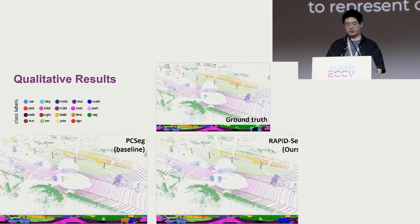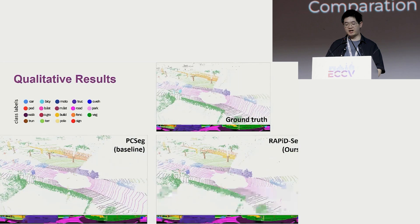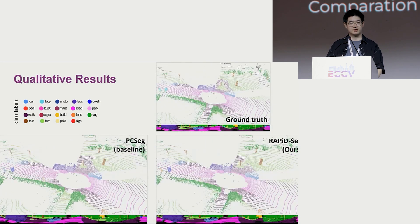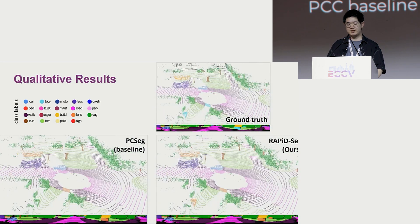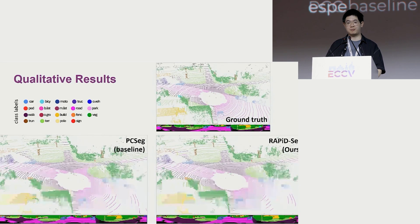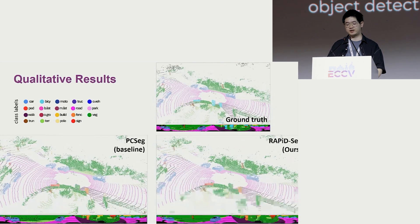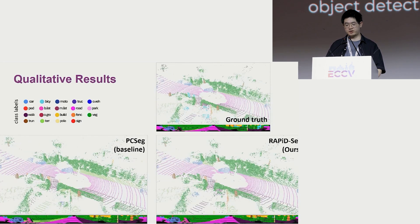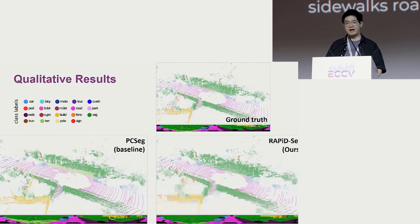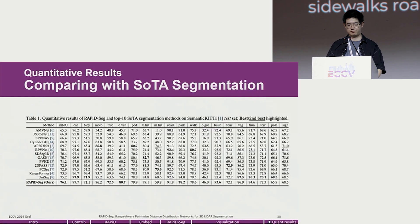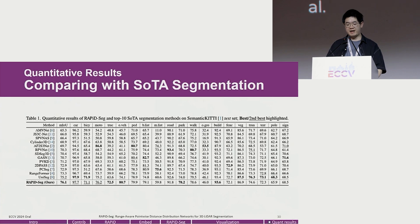We show the qualitative comparison with the PC-seq baseline and ground truth. The results clearly show our method performs better, especially in rigid object detection. Rigid object classes like parking areas, sidewalks, roads, and cars are slightly better than the baseline. Quantitative results show that our method beats all state-of-the-art methods on the SemanticKITTI dataset and also on the nuScenes dataset.